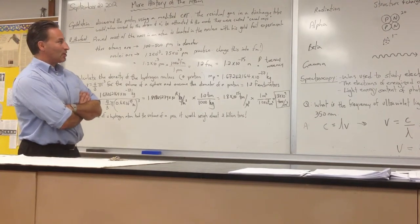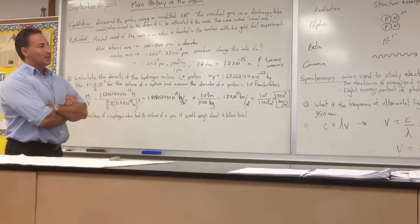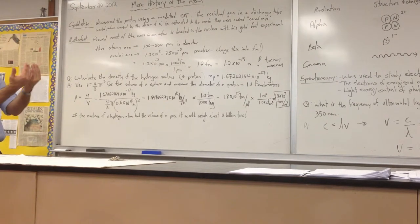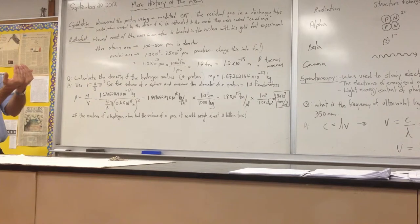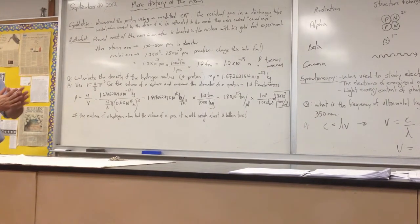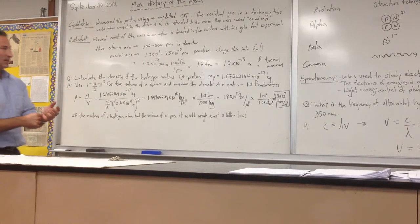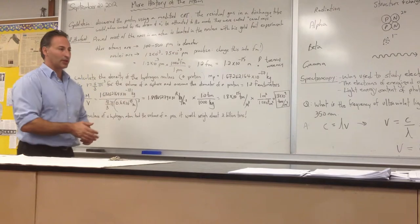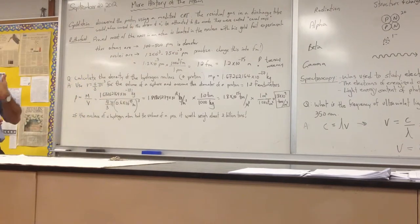But what Rutherford actually noticed, and the way he detected these particles blasting through, was by having a zinc sulfide screen behind the target, the gold foil target. So most of the particles he expected would blast right through, and most of them did. Some of them, though, looked as though they had been ricocheted like bullets. And a few of them even came straight back.